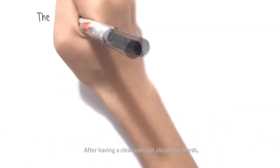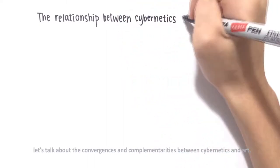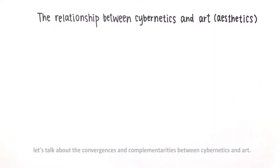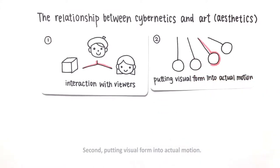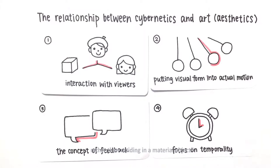After having a clear concept about the words, let's talk about the convergence and complementarities between cybernetics and arts. It can basically be divided into four parts. First, interaction with viewers. Second, putting visual form into actual motion. Third, the concept of feedback. And lastly, focus on temporality.